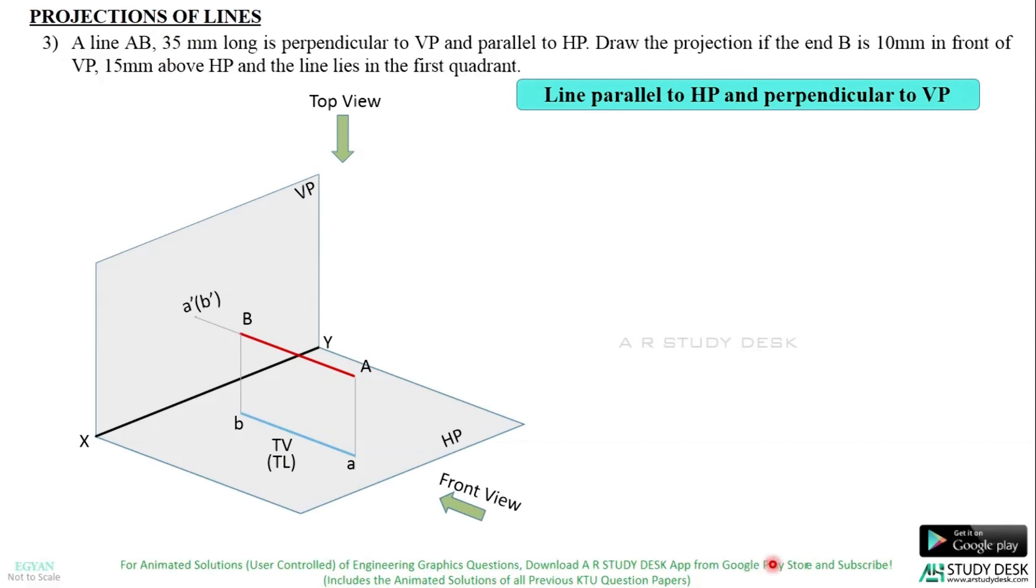Now let us see how to draw this on a paper. So mark the scale and then the unit. First of all, you will be drawing the XY line. In the front view, you can see the line as a point A dash brackets B dash. Where is this point A dash brackets B dash? It is above XY line. It is 15mm above HP. So this distance is 15. So you will mark the point A dash brackets B dash 15mm above the XY line.